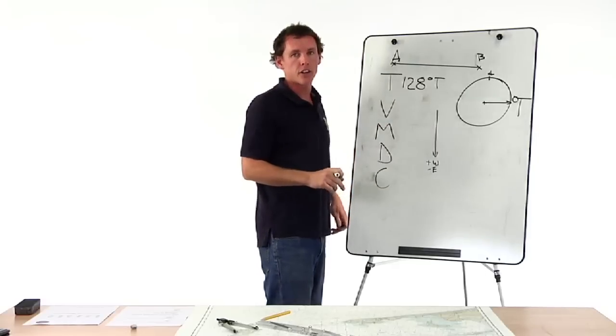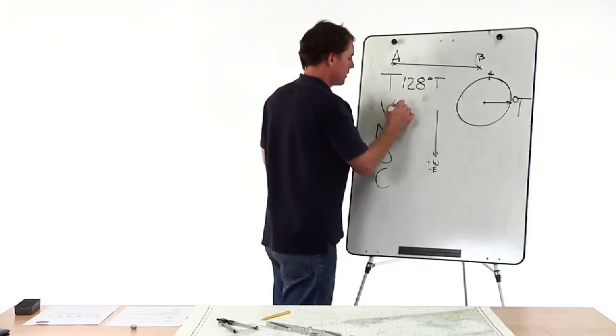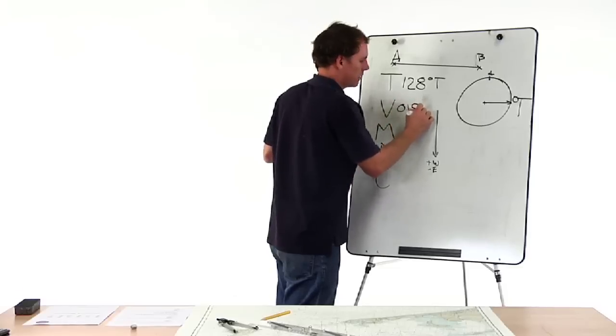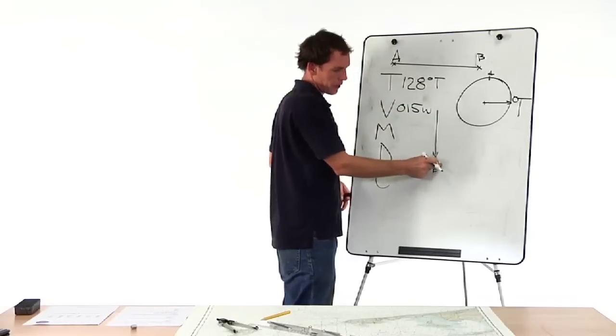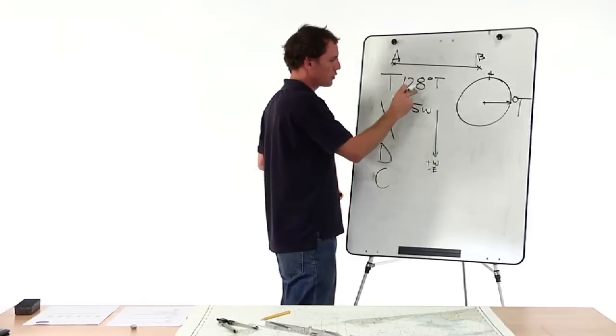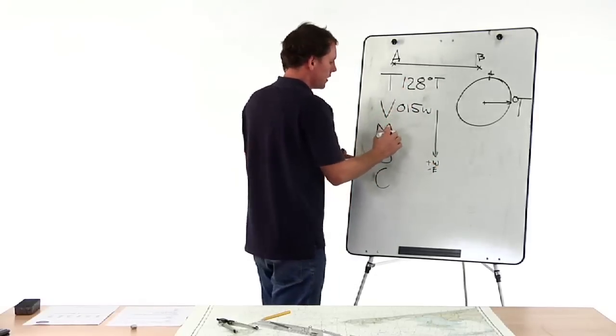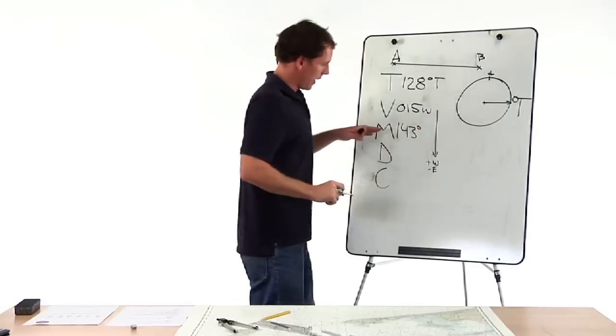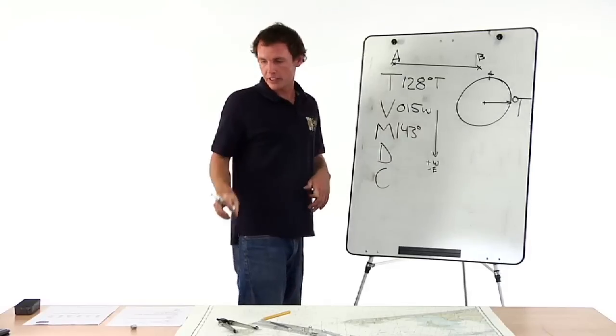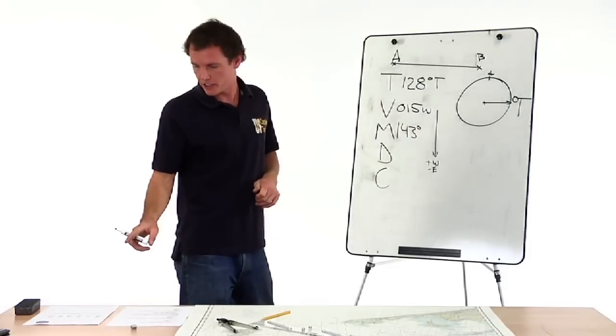Variation on a Block Island chart is 15 degrees west. We're working from true to compass, we're going down, we add west and subtract east. 128 plus 15 west is 143 degrees magnetic, which brings us to our deviation table.